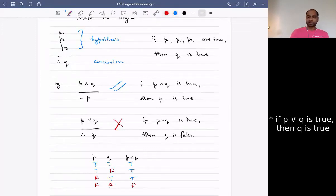Now, once I build a truth table, look at all the places where my hypotheses are true. So my hypothesis here is P or Q. And where are all the places where my hypothesis is true? It's first three.